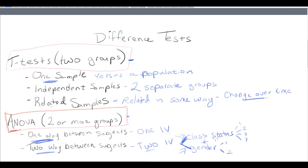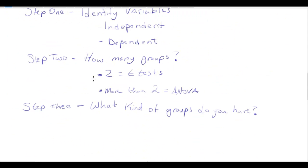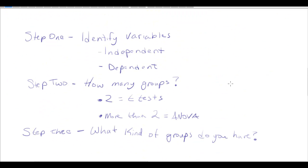These are all of the tests we've talked about up to this point in the course. How can you read a research scenario and decide which of these tests to use? Let me give you some steps. The first step is to read the research scenario — you'll need to read through it a couple of times to understand what's going on. Then identify all of your variables: what's your independent variable and what is your dependent variable?